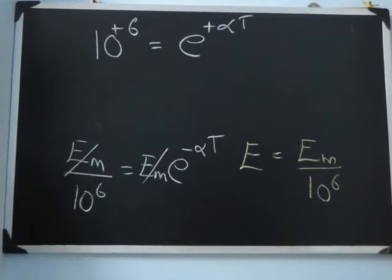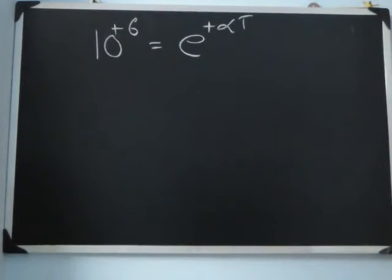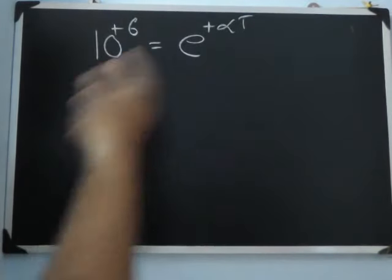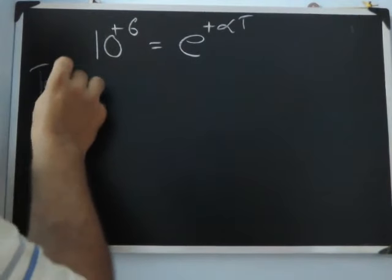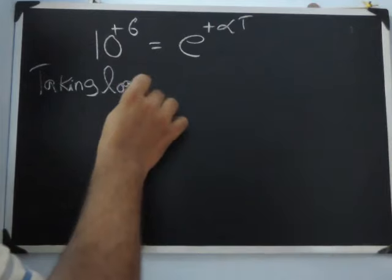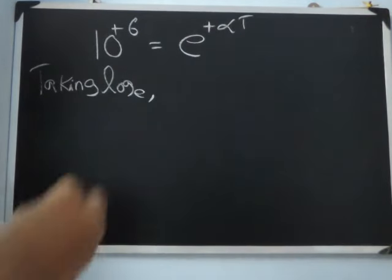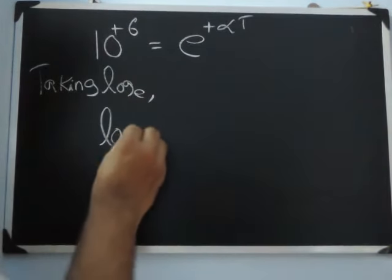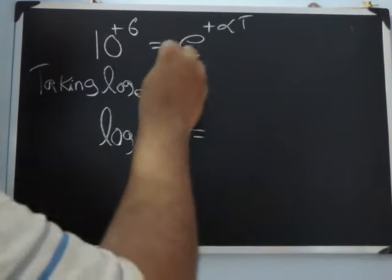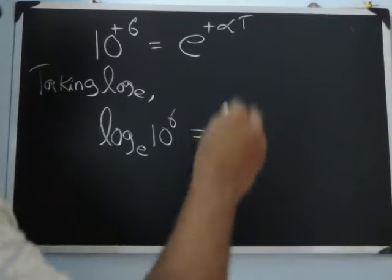I want T which is in the power of e, so I will take logarithms, natural logarithms, which is the inverse of e. Taking natural logarithm to the base e, we will have log base e of 10 power 6 equals alpha T.